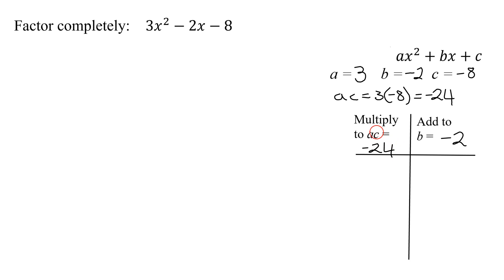Since the 2 numbers I want multiply to a negative, that means they're opposite in sign. And since they add to a negative, the one with the bigger absolute value has to be the negative number. So I am going to start with 1 and -24. They definitely multiply to -24. 1 added to -24 is -23, which is definitely not the number I want.